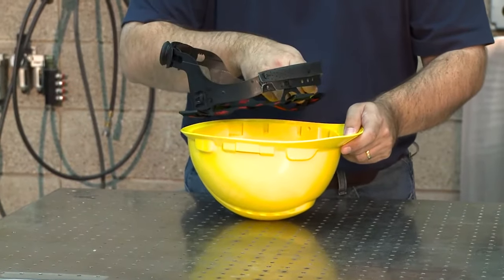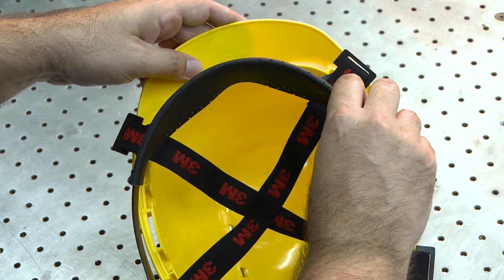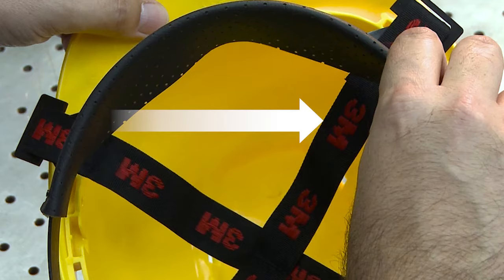Place the suspension inside the hardhat shell with the brow pad facing towards the front brim of the hardhat. Make sure you can read the 3M logo on the hardhat suspension straps.